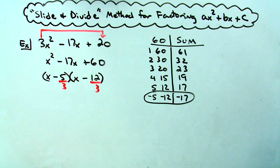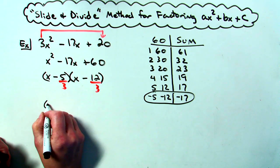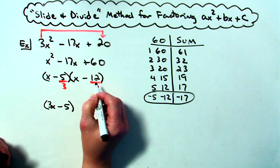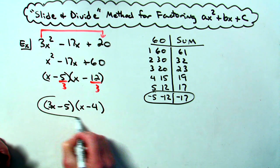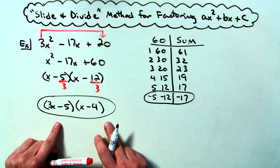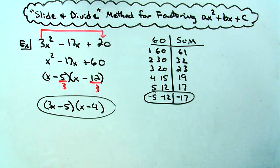Again this one does not divide out so I'm going to take that 3 and pull it out in front of that x. So this binomial is 3x minus 5. This does divide out so then I've got an x minus 4. So the trinomial 3x squared minus 17x plus 20 factors down to 3x minus 5 times quantity x minus 4.